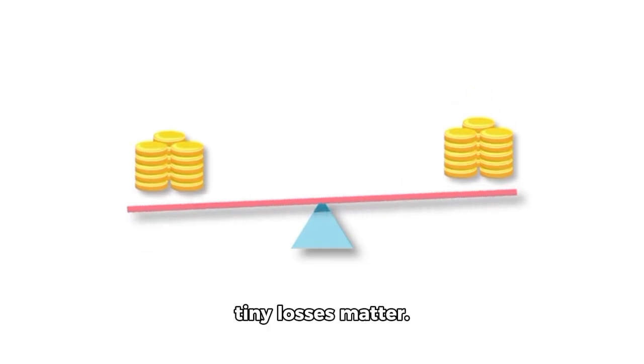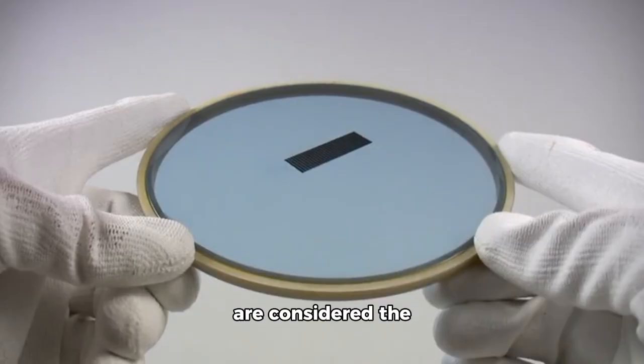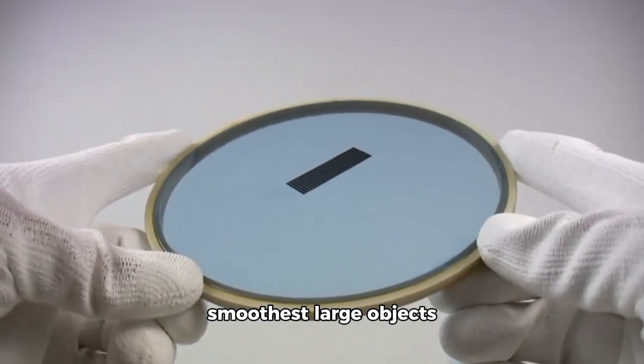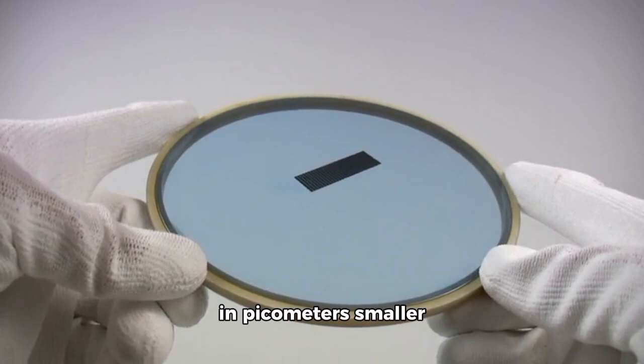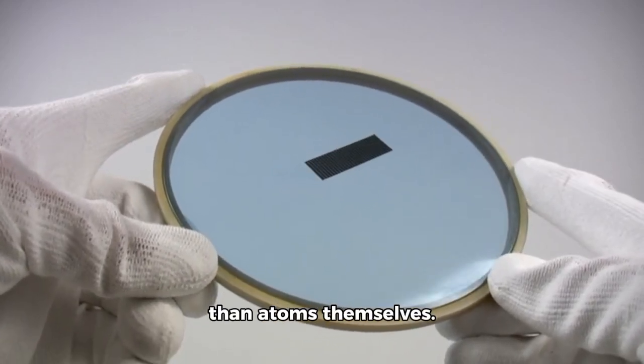Stacked together, even tiny losses matter. That's why ASML's mirrors are considered the smoothest large objects ever manufactured, with surface errors measured in picometers, smaller than atoms themselves.